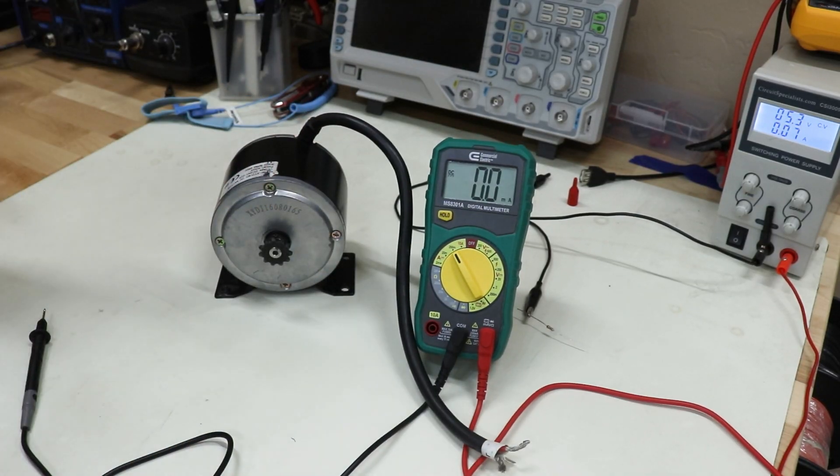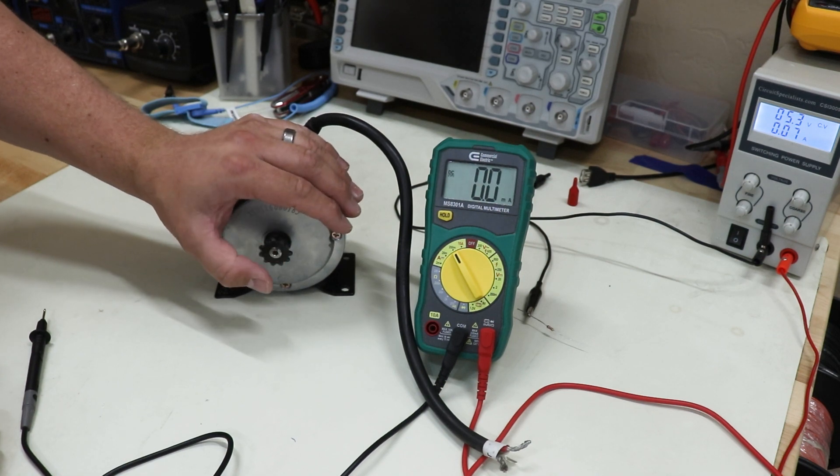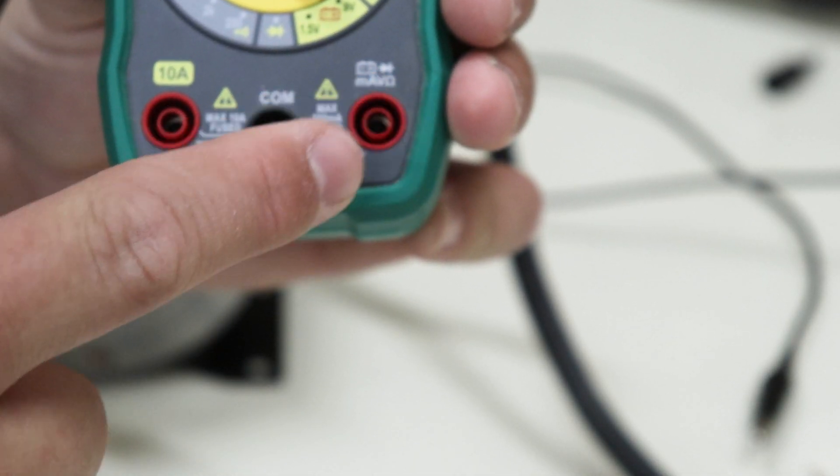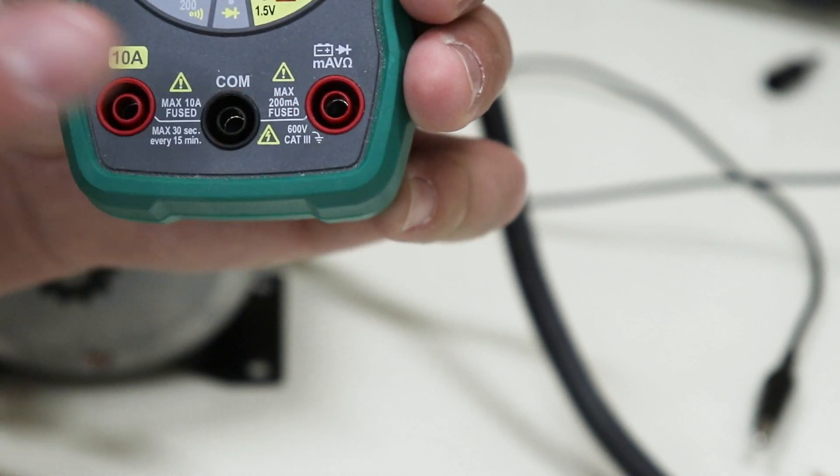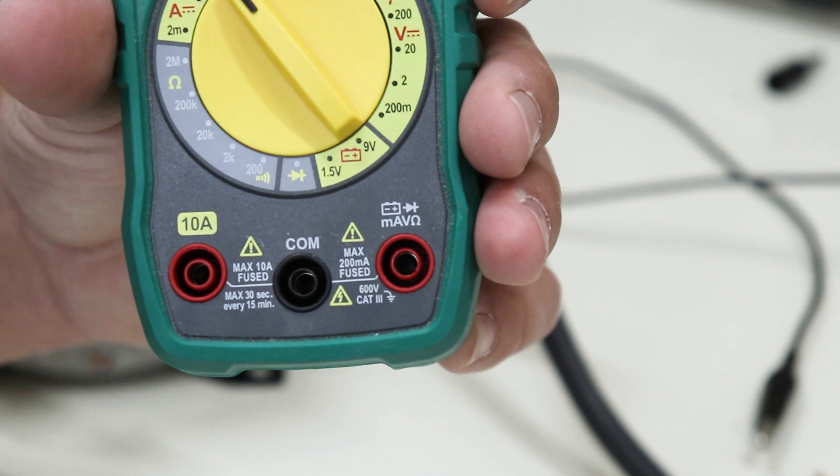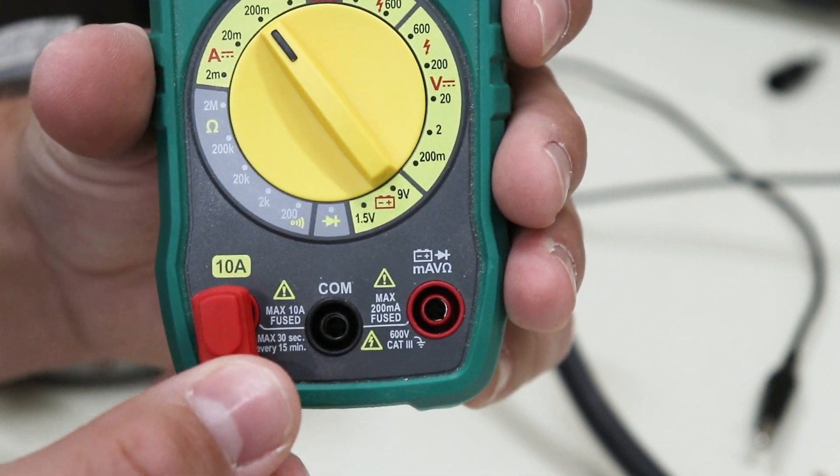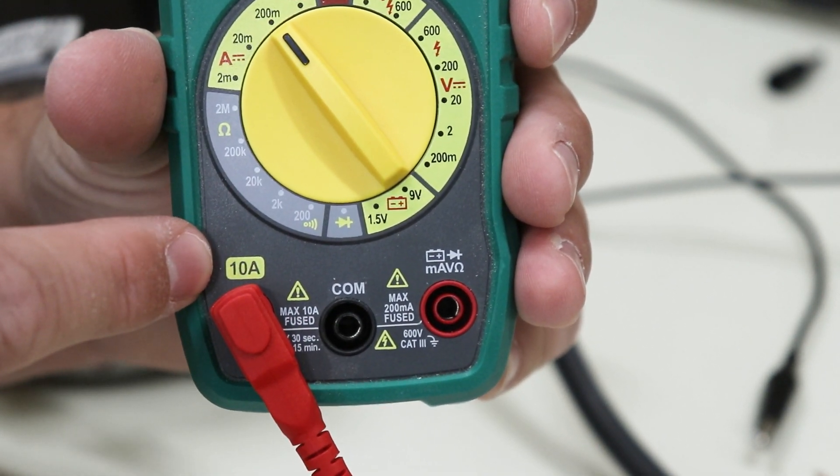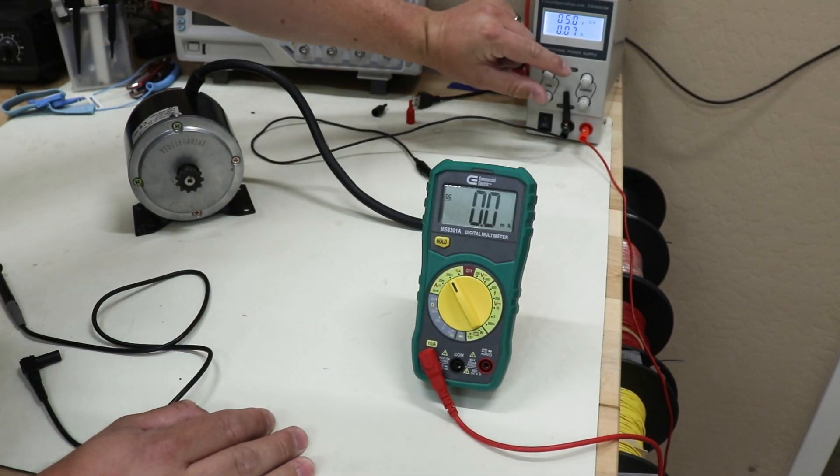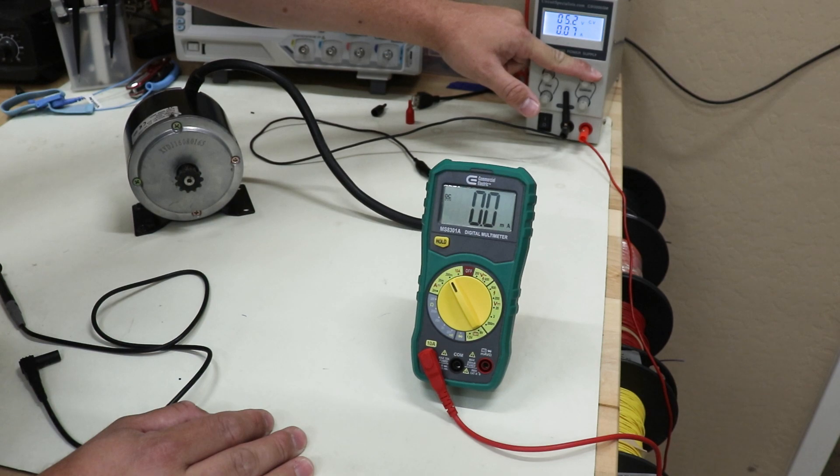Let's say that I want to measure the current of something that draws a lot more power, like this motor here. I know that the limit of this right socket on this multimeter is 200 milliamps. This motor is going to draw much more than 200 milliamps, so I need to plug in the red probe into this left-hand socket, where I know that the limit is much higher here at 10 amps.